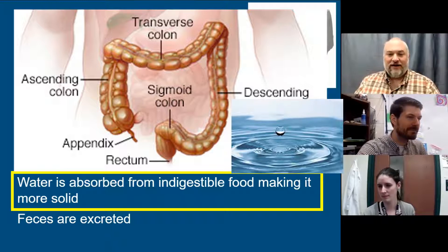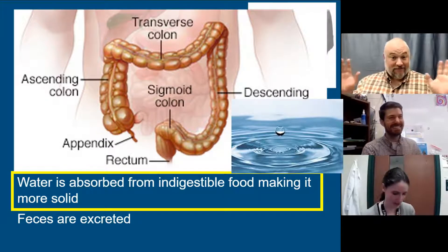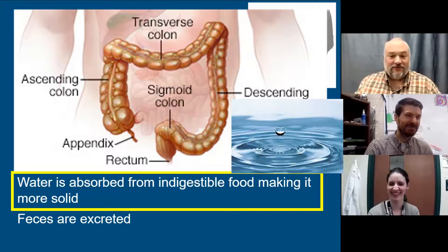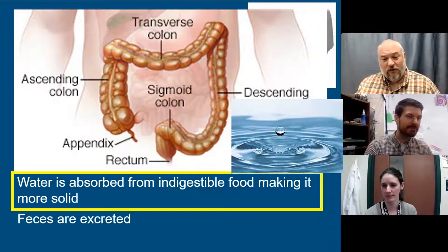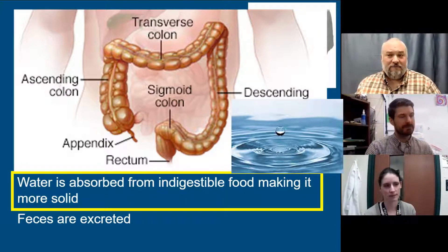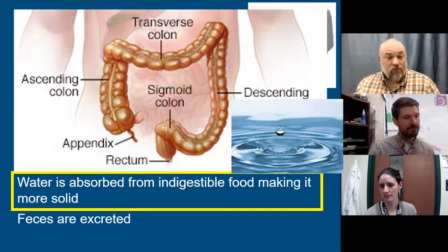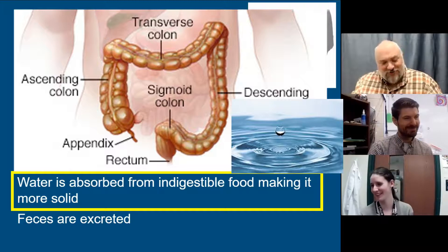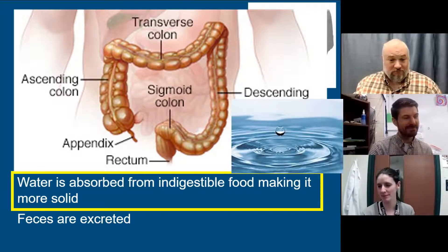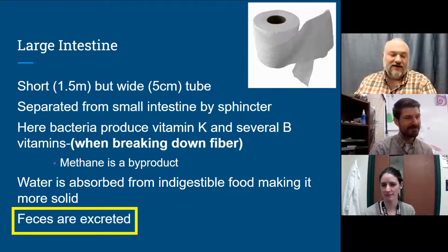Think about really bad diarrhea — it comes out almost like liquid. That happens because the food moved through too quickly before the intestines could absorb all that water. When it's working correctly, you're absorbing all that water out of the waste into your bloodstream, which gives you nice solid feces at the end that you excrete. So diarrhea is essentially what happens when the large intestine doesn't get the chance to do that water absorption.